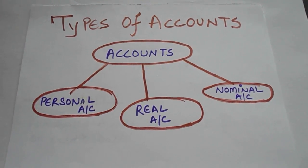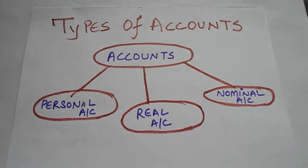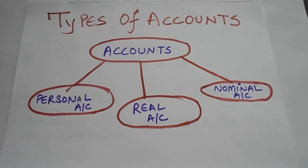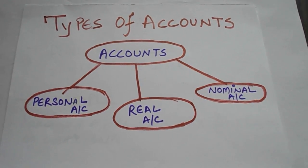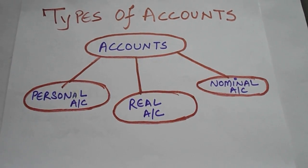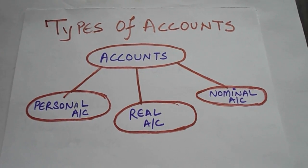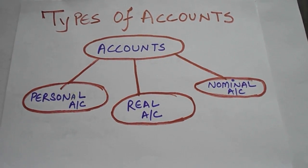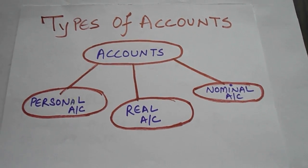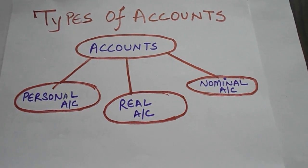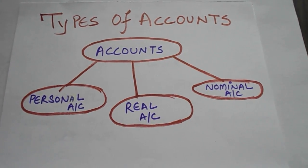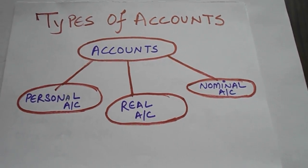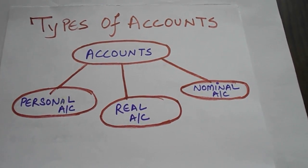Personal account is linked with persons — the person who is receiving something or the person who is giving something. The personal entries will be recorded in your personal account. Real account deals with what is coming into your business and what is going out of your business. Nominal account shows your profits, losses, gains and expenses.